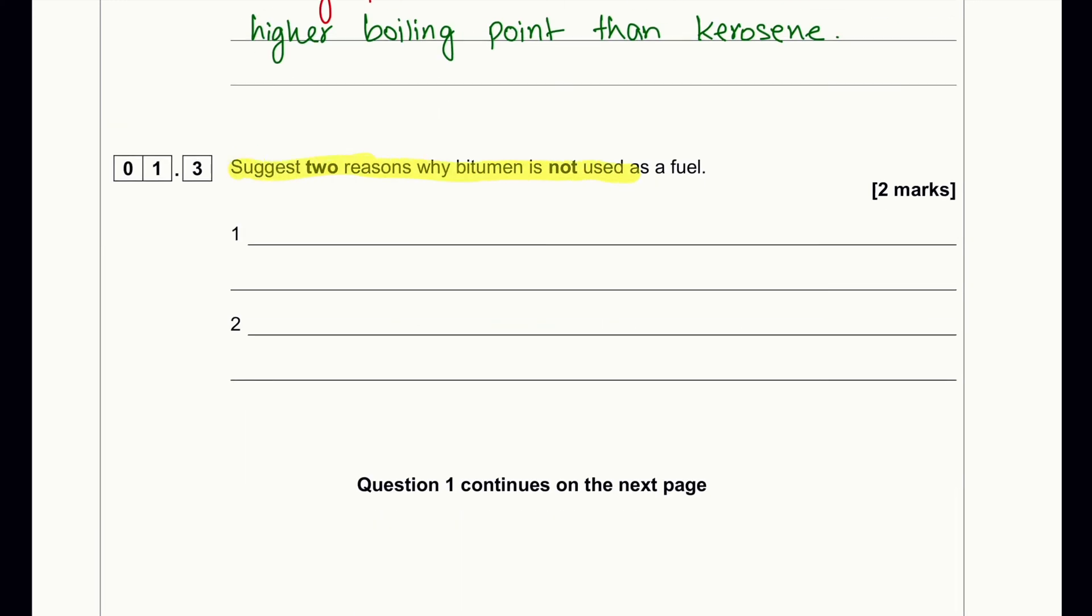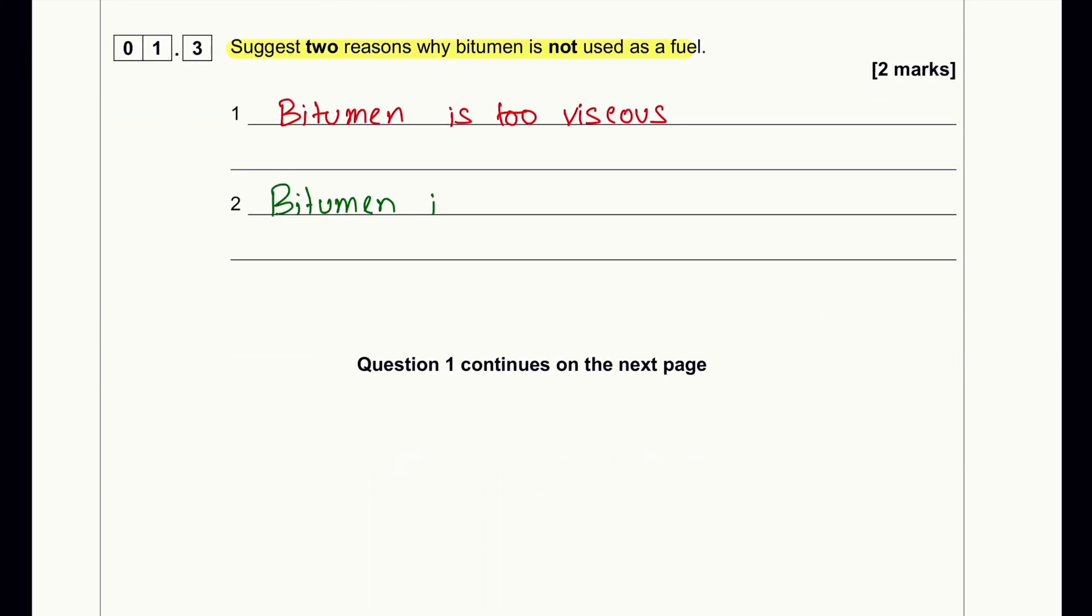So just two reasons why bitumen is not used as a fuel. It is too viscous and it is not very flammable. That's why bitumen cannot be used as a fuel and it also has a very high boiling point.